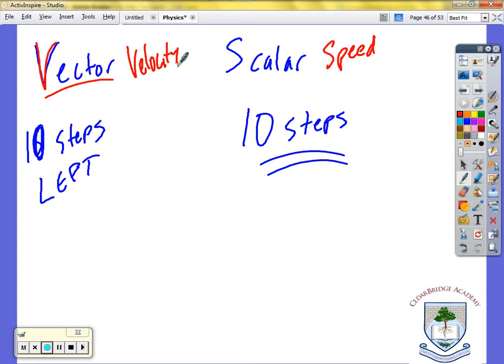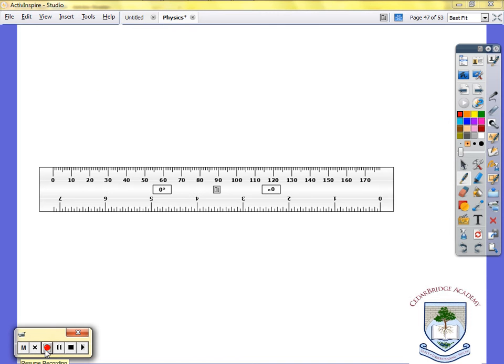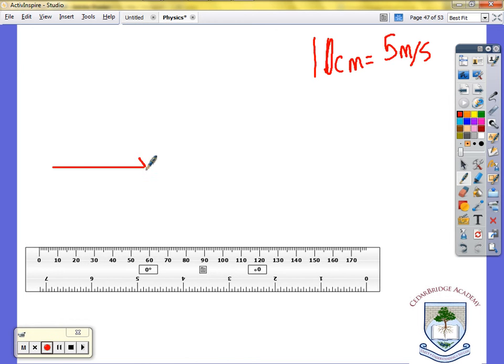What they like to get you to do is teach vectors through diagrams. So what they'll do is they'll give you a key and they will say 10 centimeters equals 5 meters per second. And then they'll show you a line with an arrow and your line will go like that.